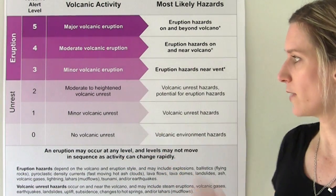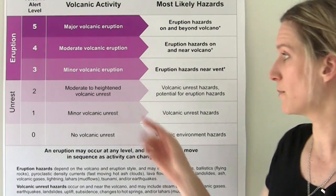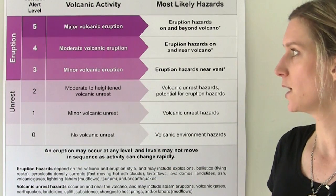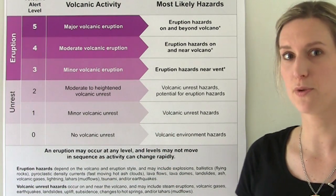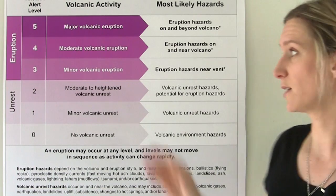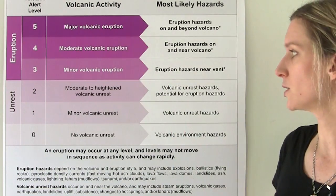There are two levels of unrest: minor volcanic unrest, and moderate to heightened volcanic unrest. And then there are three levels for eruptions, which are basically small, medium and large.